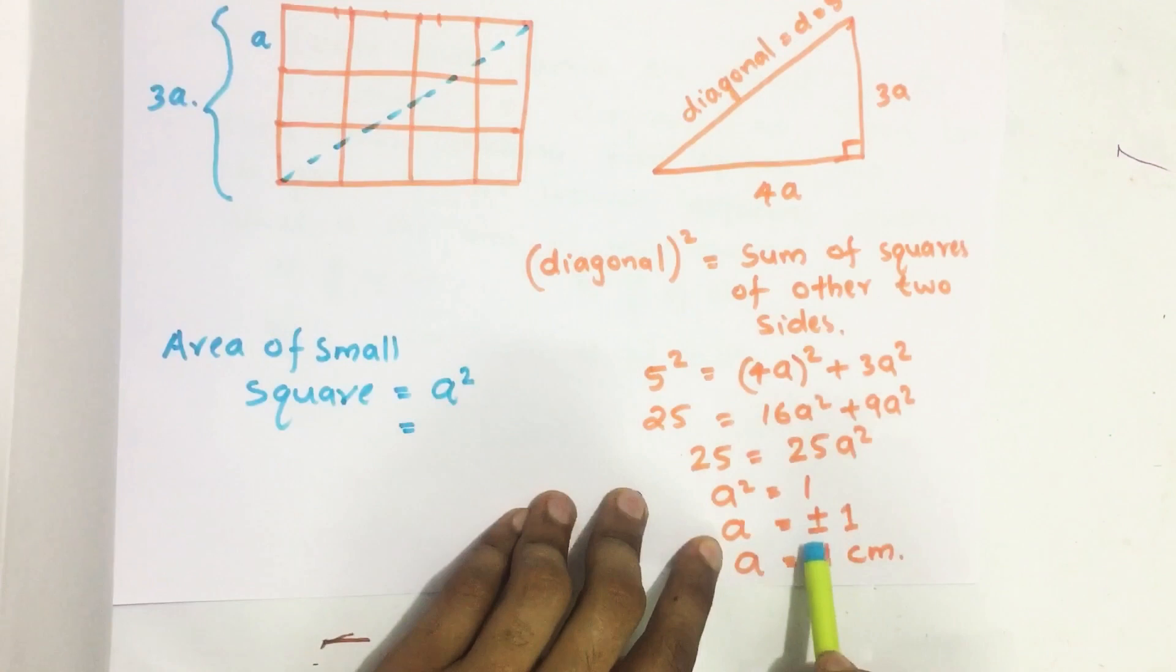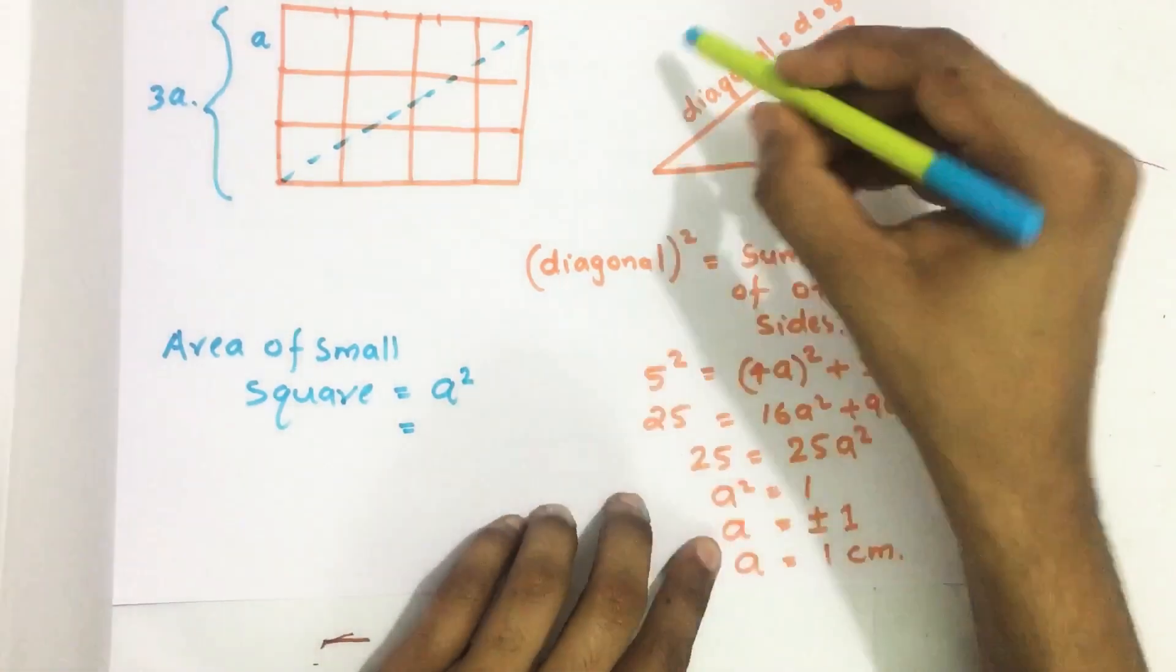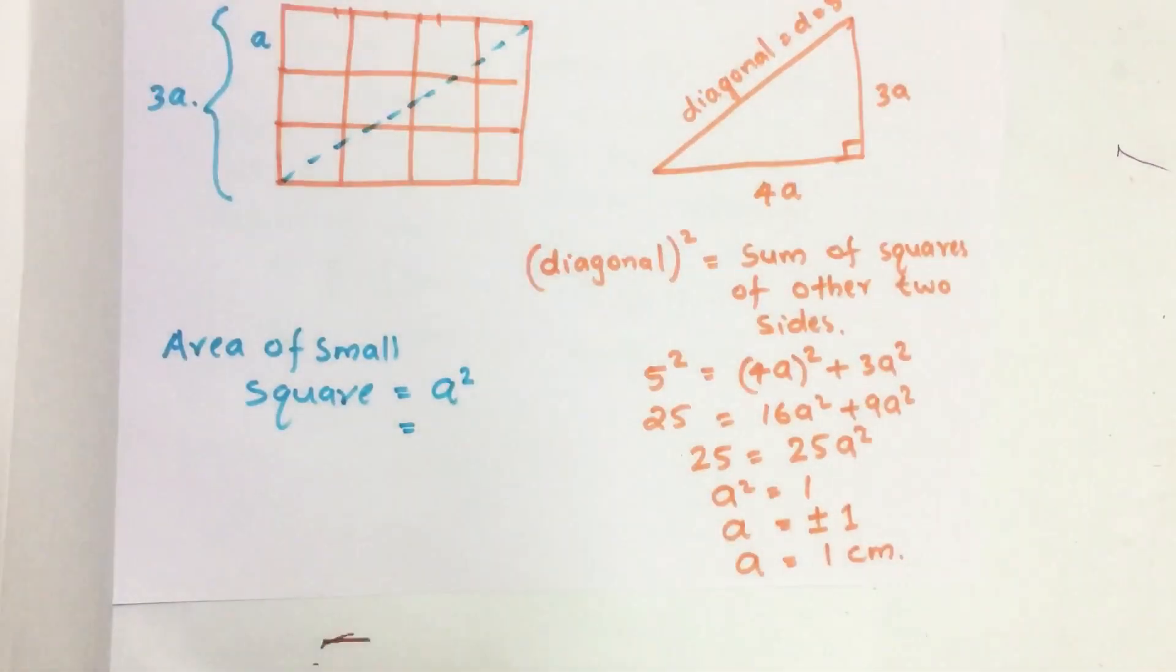A is plus or minus 1, but it should be a positive quantity, so A equals 1 centimeter.